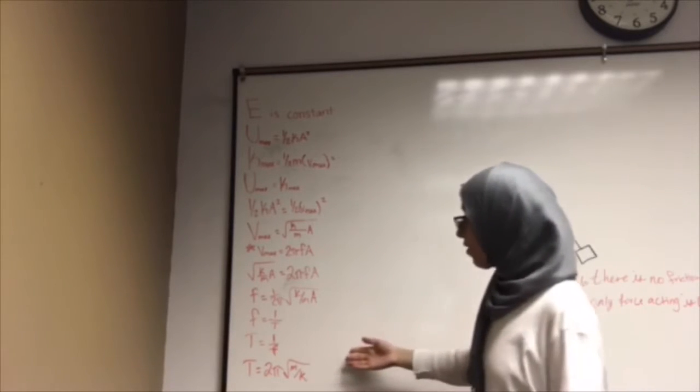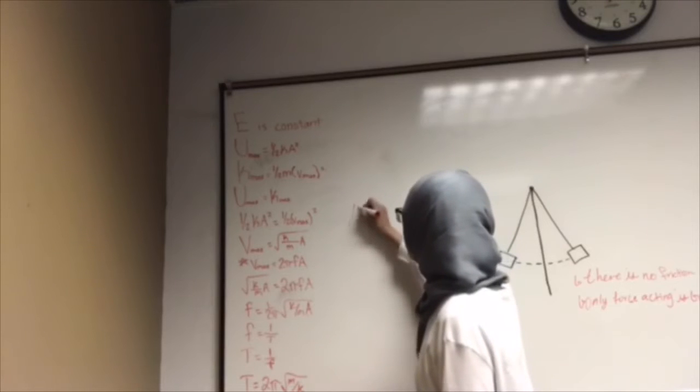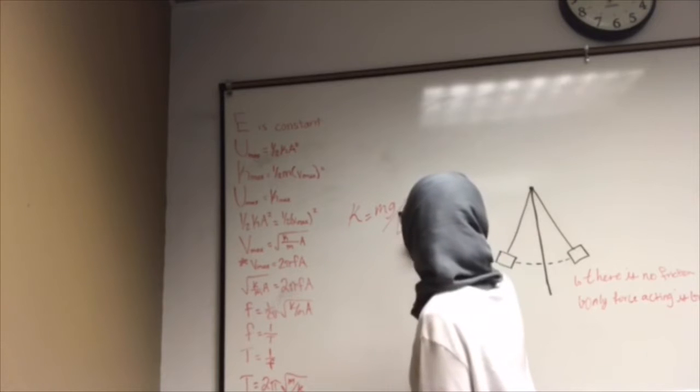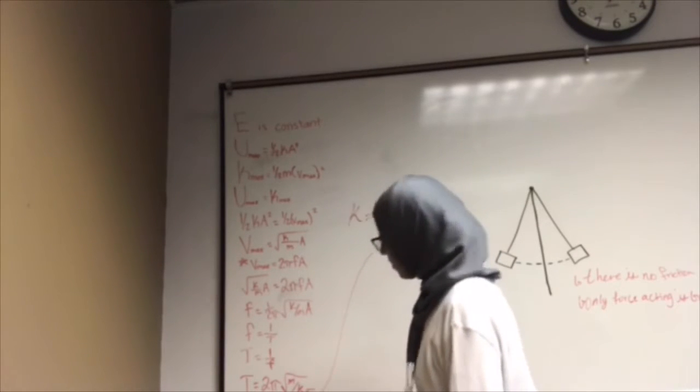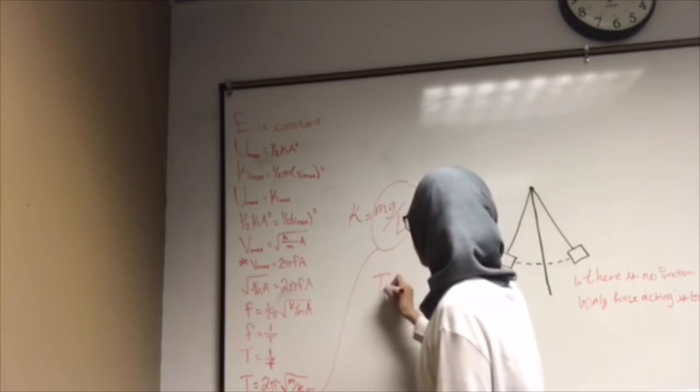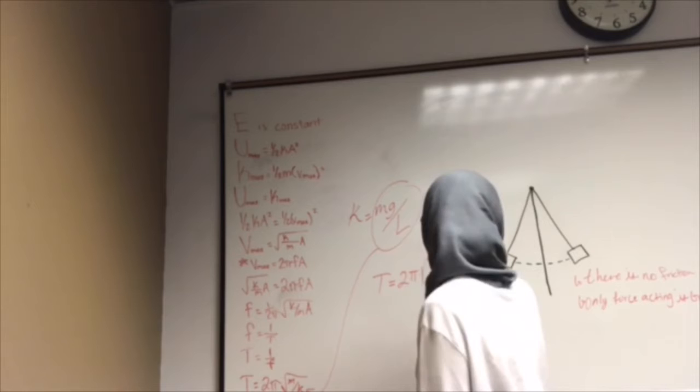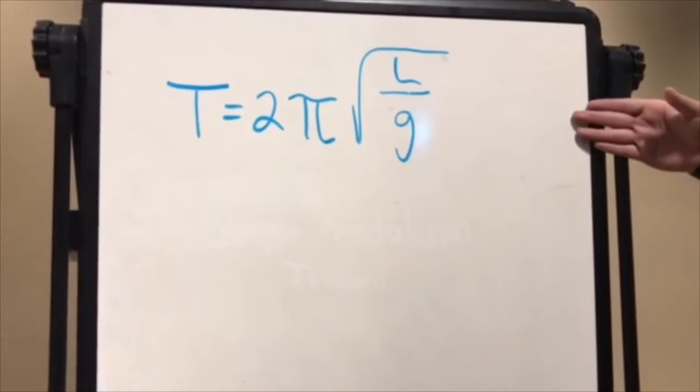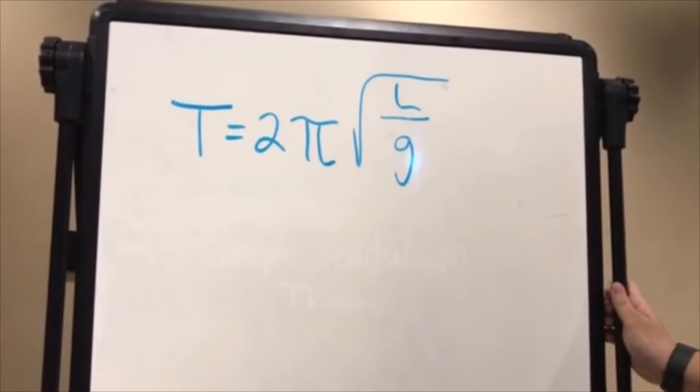When we solve for that equation, we get this expression. Now K for pendulum motion is mg over L. If we plug in this expression into K in this equation, we get that the period from peak to peak equals 2π square root of L over G, which is the equation that we're going to use. This is the simple pendulum equation we'll be using: T equals 2π times the square root of L over G.